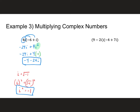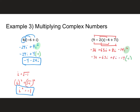Moving to the second problem — this is a FOIL situation: a binomial times a binomial. So: 9 times negative 4 is negative 36; 9 times 7i is plus 63i; negative 2i times negative 4 is plus 8i; and negative 2i times 7i is negative 14i squared. I replace i squared with negative 1, so negative 14 times negative 1 is positive 14. Combining like terms: negative 36 plus 14 is negative 22, and 63i plus 8i is 71i. Final answer: negative 22 plus 71i.